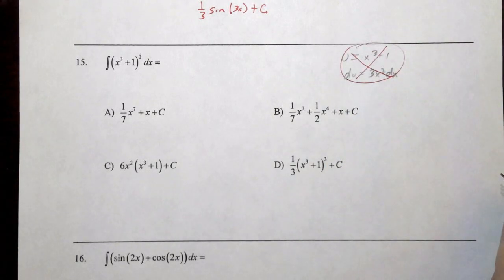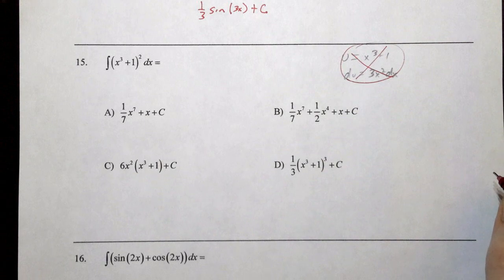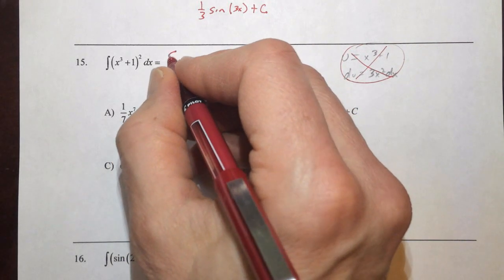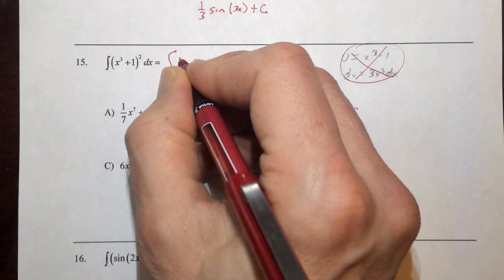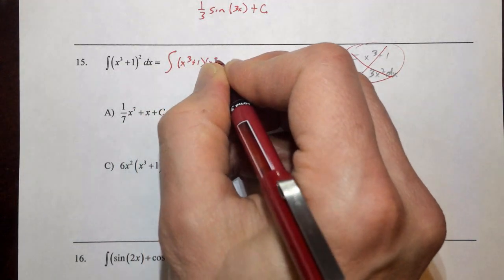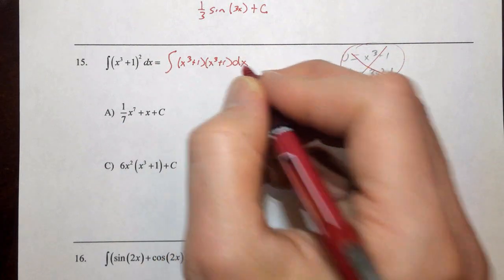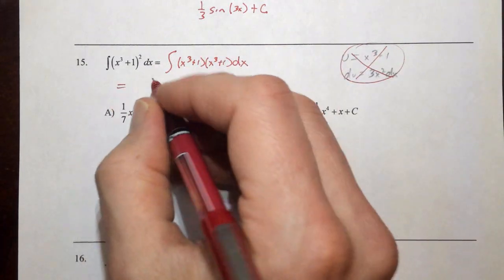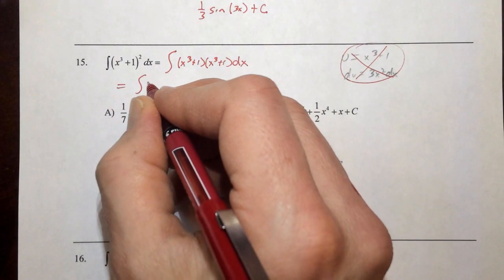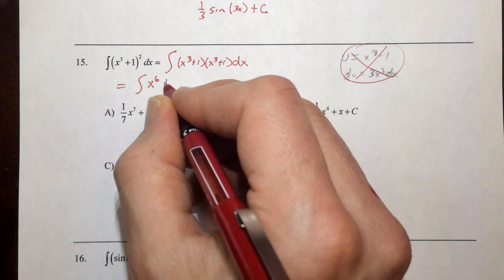We have to go like we did way back before we learned u substitution and think of this as a product of x cubed plus 1 times x cubed plus 1. If we do our distribution here, our FOIL, if you will, we end up having the antiderivative of x to the 6th plus,